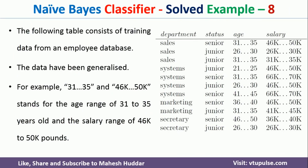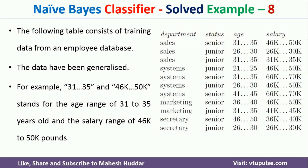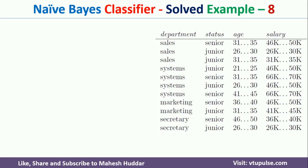In this case, we have been given a dataset with three attributes, namely department, age, and salary, and status is the target column. Given this particular data, we want to classify the new example.